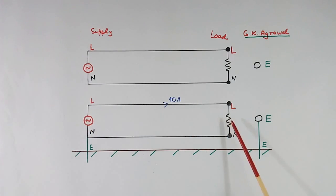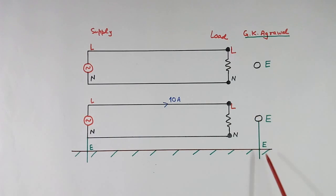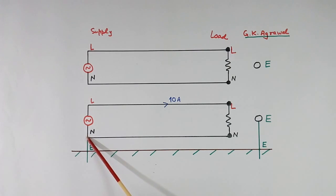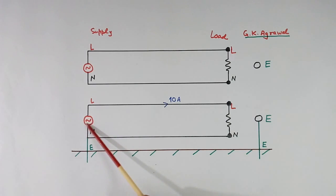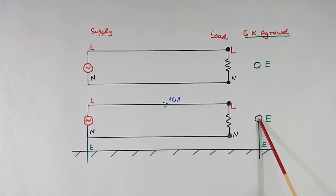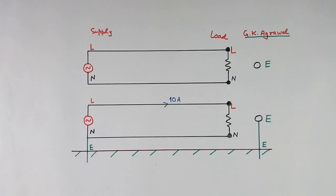Same supply, same load. But this earth point I have connected to earth. This is shown in green color. Earth wire is shown using green color. At the supply side, neutral itself is connected to earth. So there is a difference — at the supply side, neutral itself is connected, but on the load side, earth and neutral have no connection. The earth point is connected to earth.